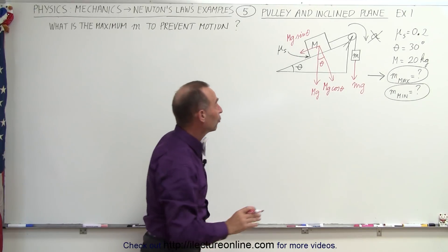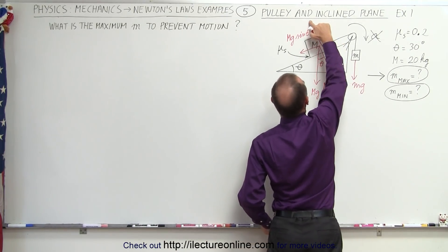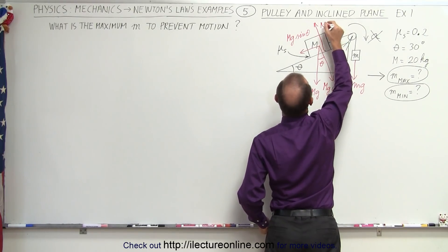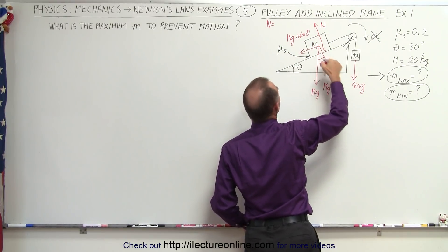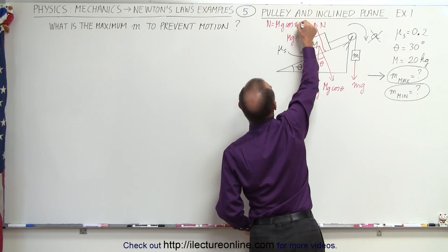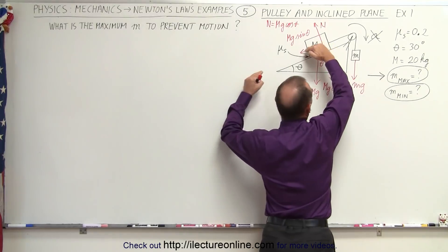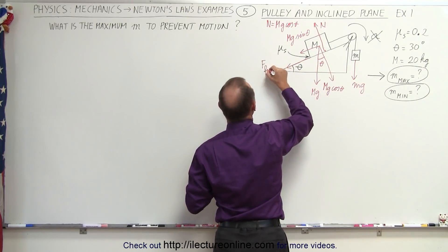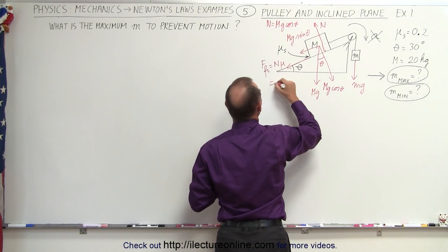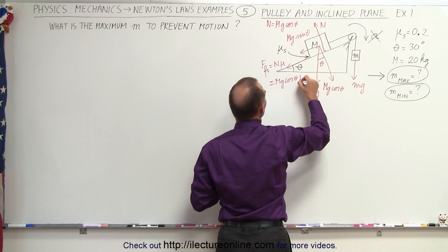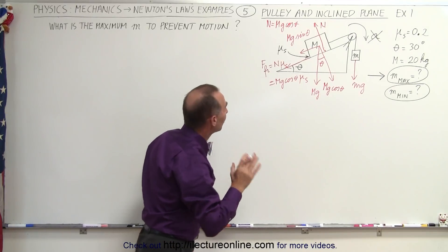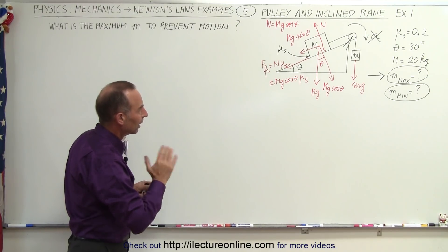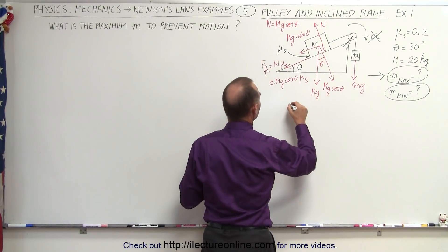We also have the friction force, so we find the normal force — which equals Mg·cosθ, the perpendicular component. Realizing that if there were no friction the small mass would accelerate the whole system in this direction, the friction force points in the opposite direction. So the friction force equals the normal force times mu, giving us friction = Mg·cosθ·μs, using the static coefficient of friction because we want the system to remain stationary.